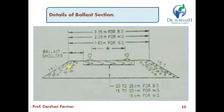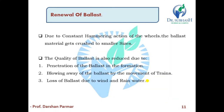We have two details of the ballast section. The width for broad gauge is 3.35 m, meter gauge is 2.25 m, and narrow gauge is 1.83 m. The ballast depth ranges from 20–25 cm for broad gauge and 15–20 cm for meter gauge, and 15 cm for narrow gauge. There is a ballast shoulder, and the cross-slope of the ballast section is 1.5:1.